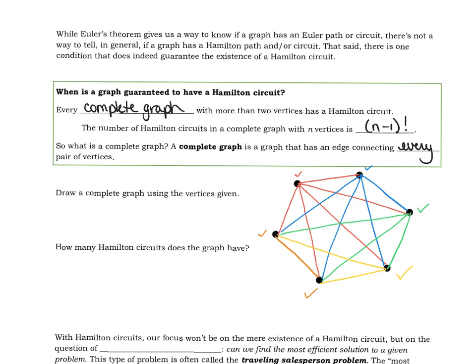The next question says how many Hamilton circuits does the graph have? Well, in this case, there are n equals six different vertices, and so our formula says that the number of circuits is (n-1)! or in this case (6-1)!.